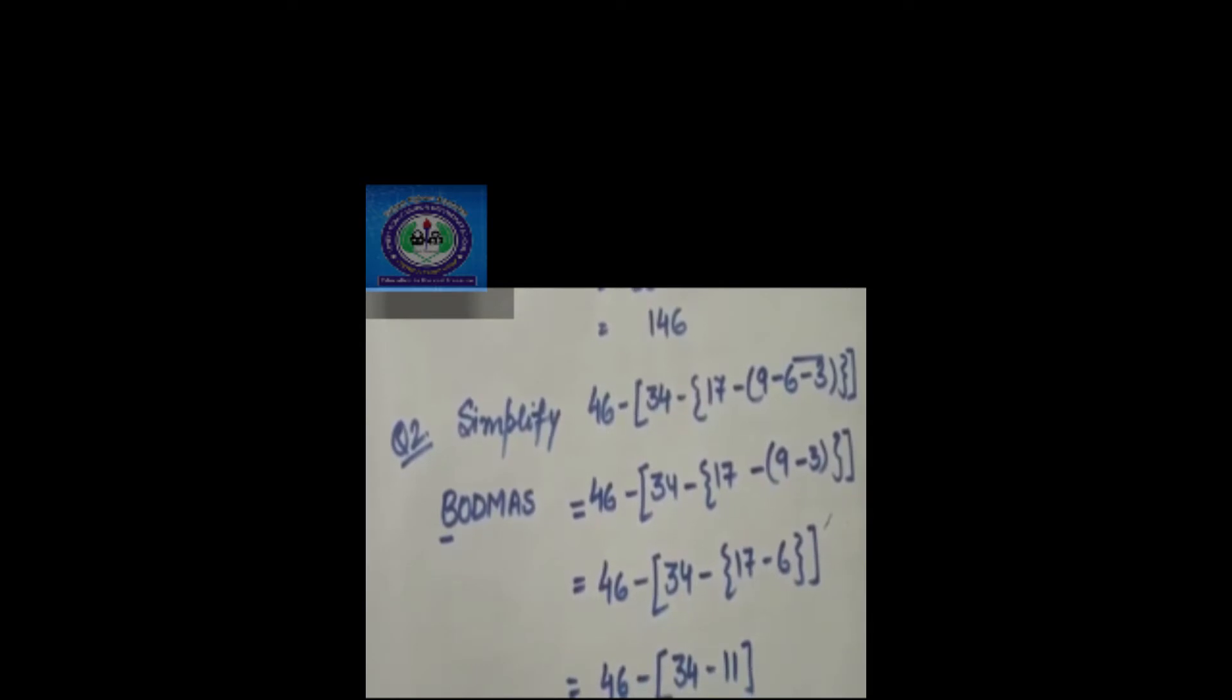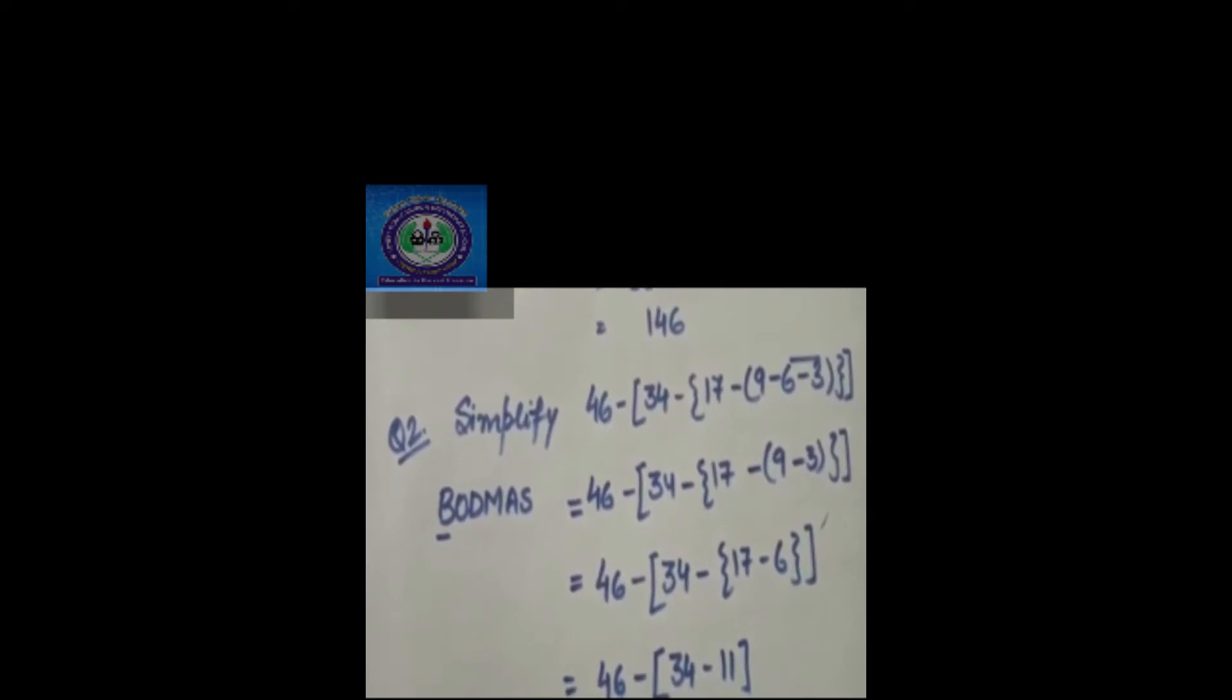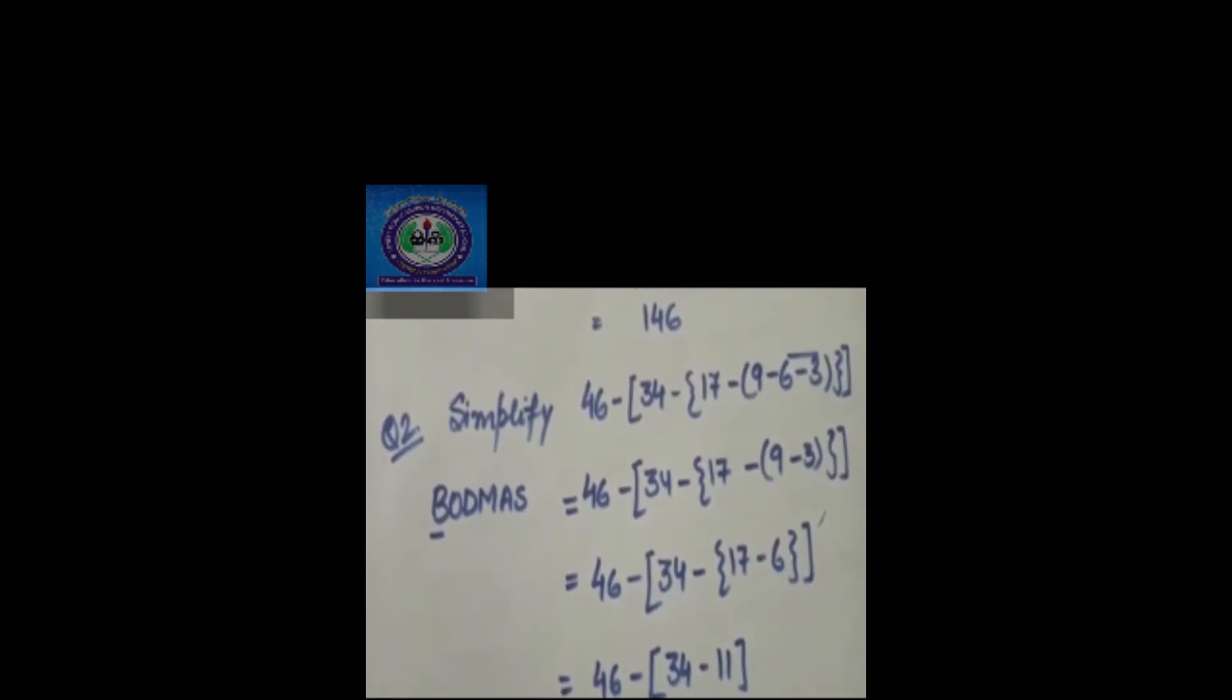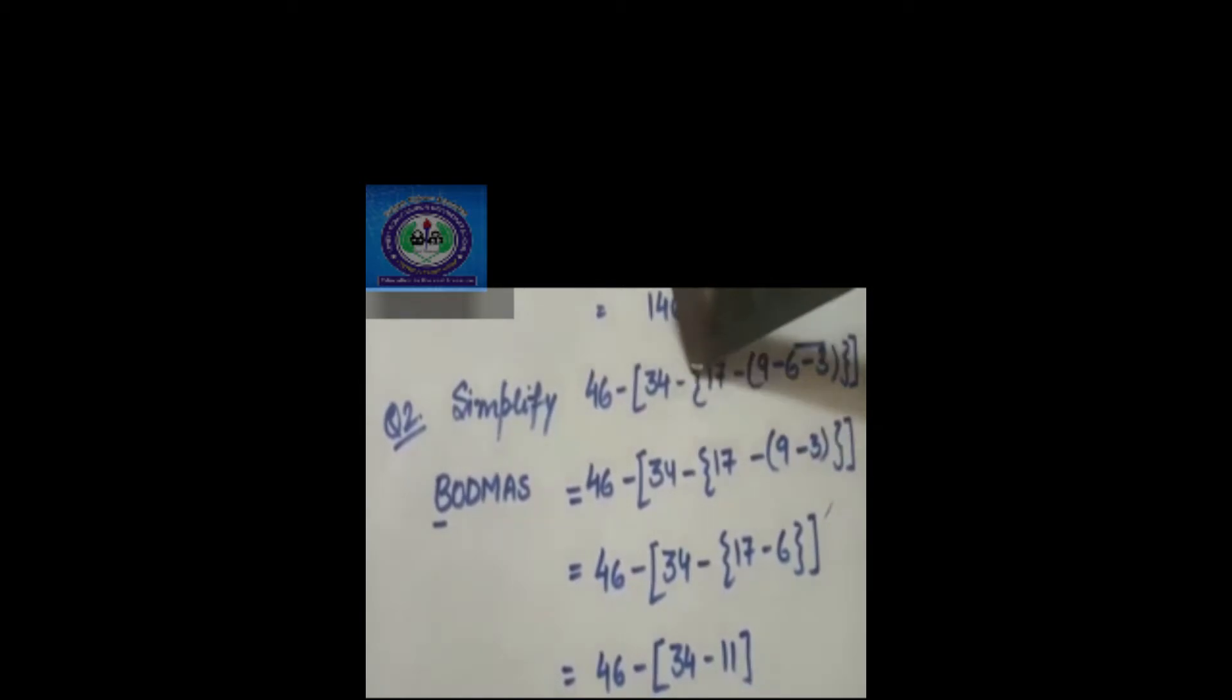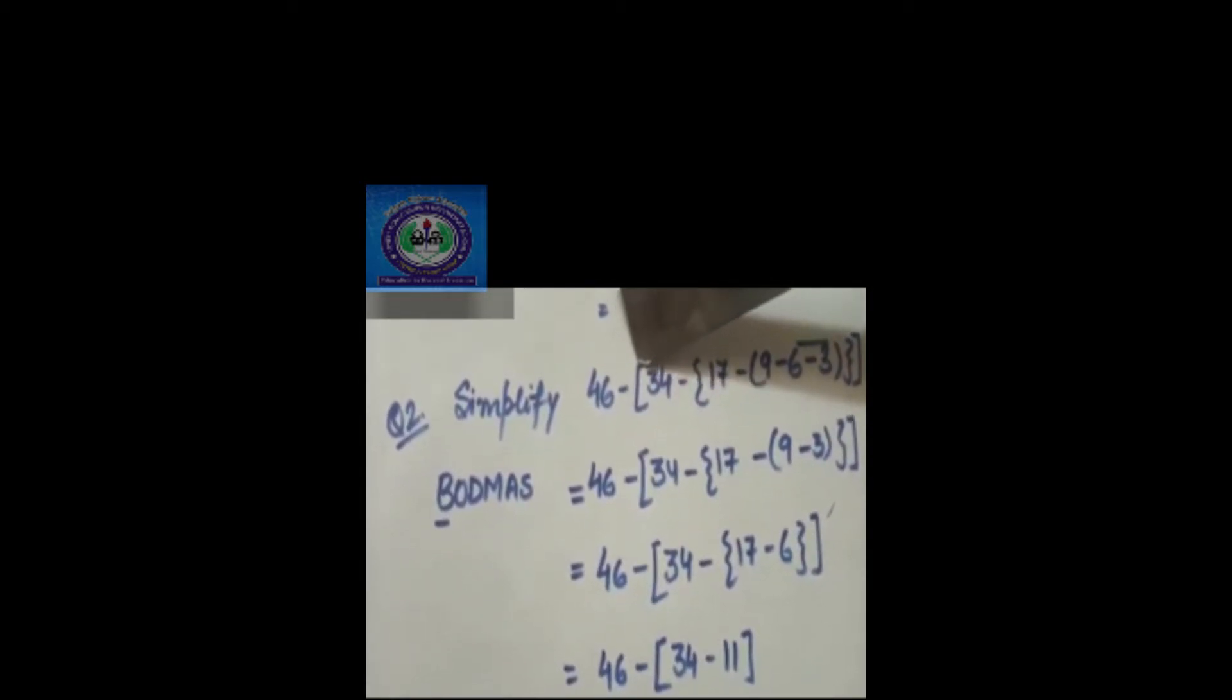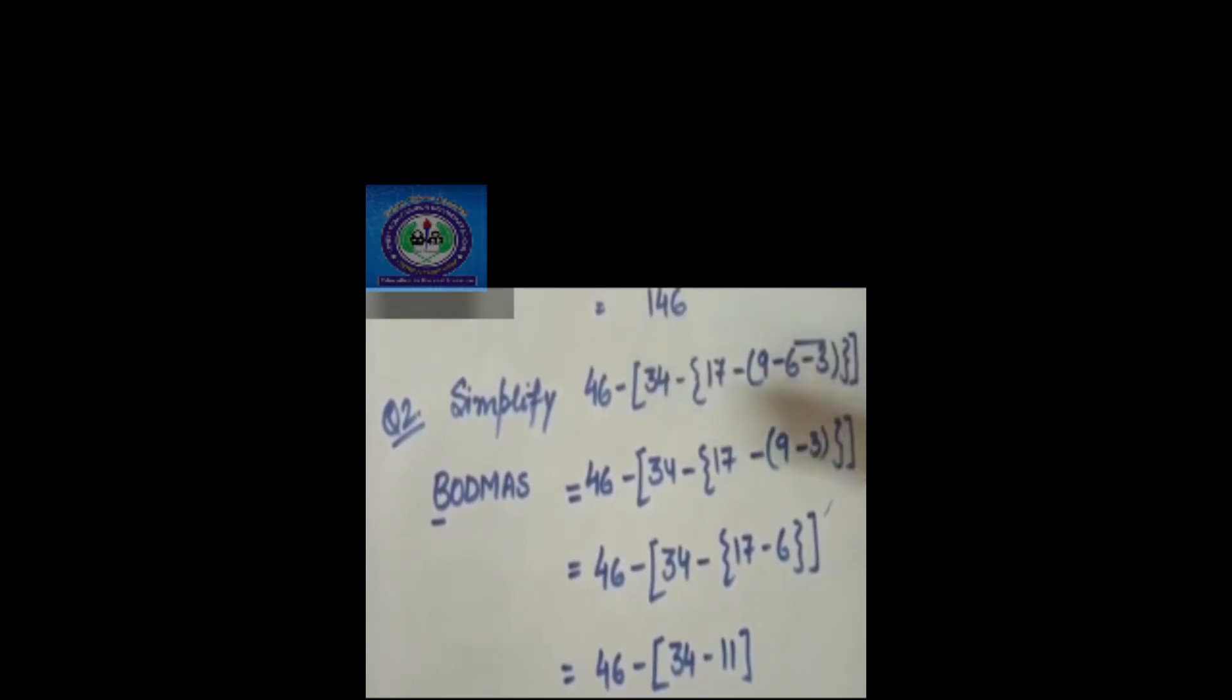You have learned about the different types of brackets. Here also we will do the simplification using different types of brackets. First of all we will use vinculum bar, then parenthesis, then curly brackets, then square brackets. Always move inside to outside.